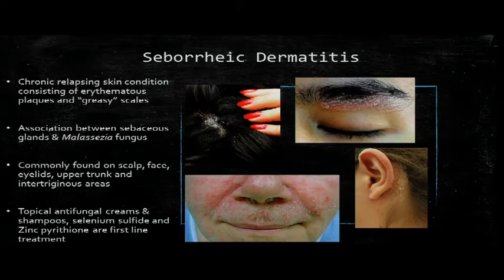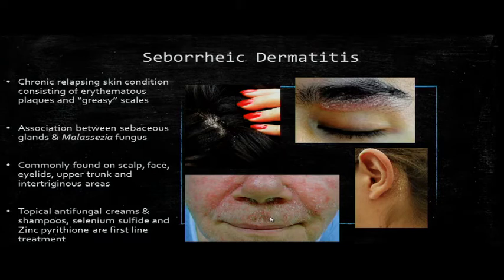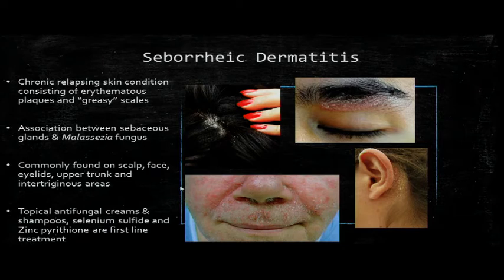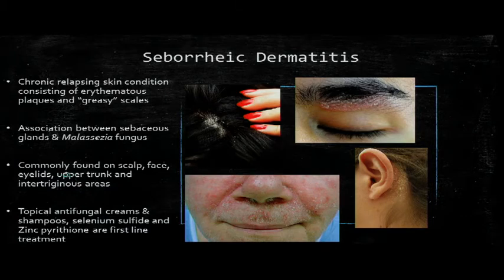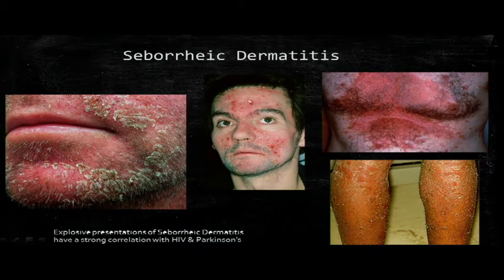Seborrheic dermatitis has a bimodal distribution affecting infants — known as cradle cap — and then adolescence through adulthood. It presents as erythematous plaques with greasy scales and is associated with the sebaceous glands and Malassezia fungus — not causing the condition directly, but being permissive for it. It can be recurrent, doesn't get better, and is usually exacerbated by stress or cold temperatures. It can be confused with eczema or xerosis. Severity ranges from mild dandruff of the scalp to explosive presentations, which have a strong correlation with HIV, Parkinson's, or use of neuroleptic medications. The difference from psoriasis is that psoriatic scales are super thick, more adherent, and bleed when removed, whereas seborrheic dermatitis scales just flake off easily.